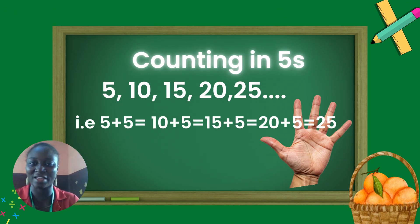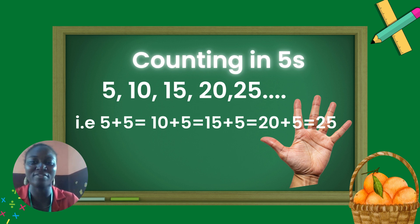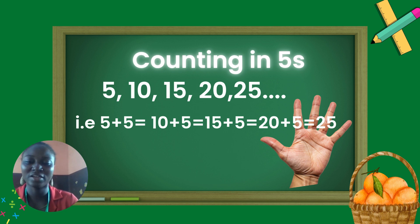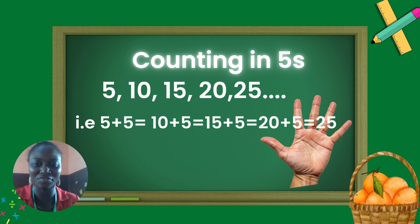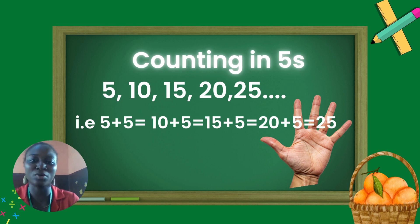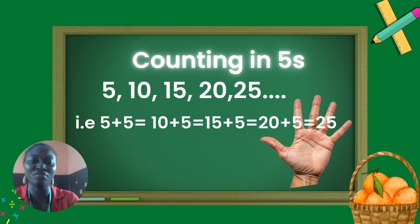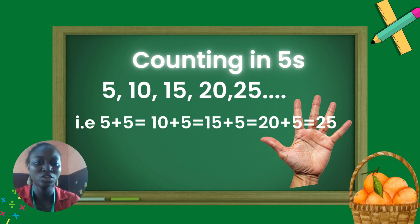Now, count in fives in five consecutive order — that is, count in five in five places. So, we have five, ten. Five plus five is ten. Ten plus five, fifteen. Fifteen plus five, twenty. Twenty plus five is twenty-five. So, counting in fives: five, ten, fifteen, twenty, twenty-five.